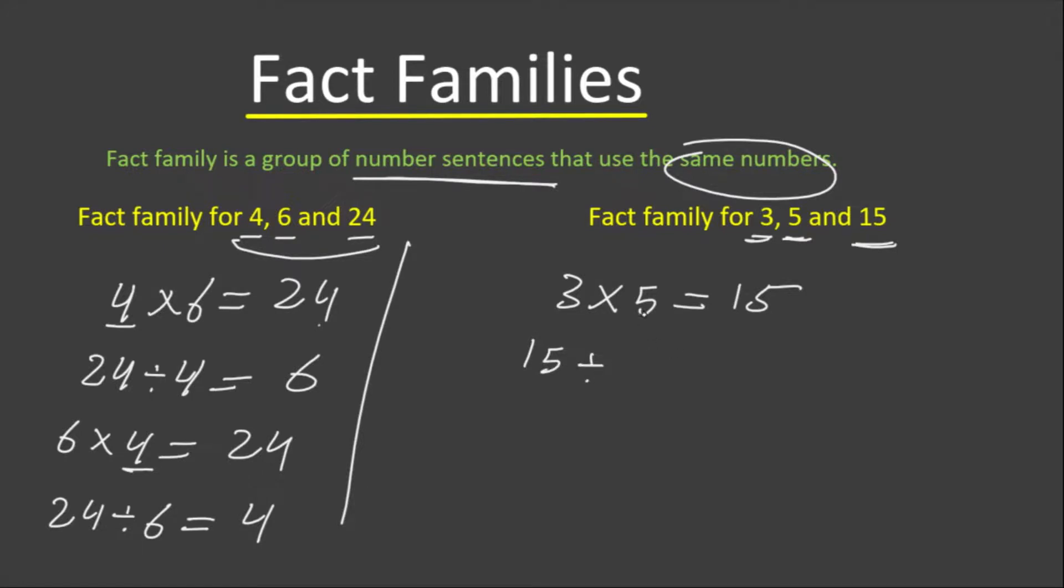Now if we divide 15, which is the product, by one of the factors, we will get the other factor as the result. Let's divide 15 by 5. 15 divided by 5 gives us 3 as the quotient or result.